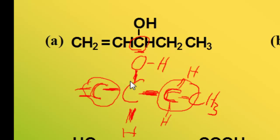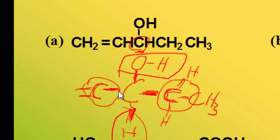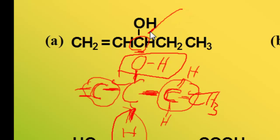So it is clear that we have one, two, three, and four different groups bonded to this proposed stereocenter. So in fact, there is one stereocenter in this organic molecule.